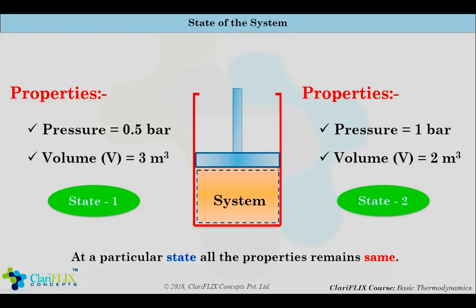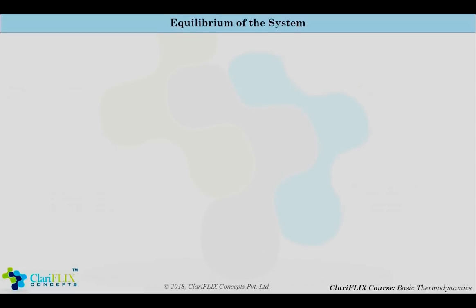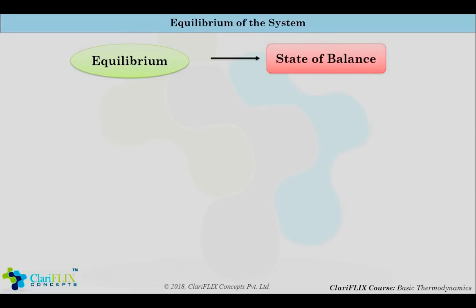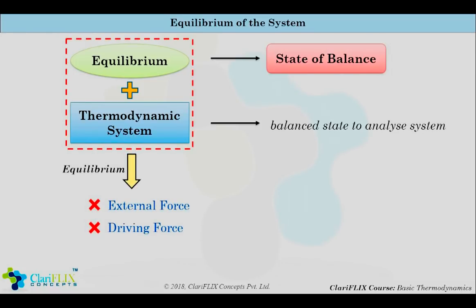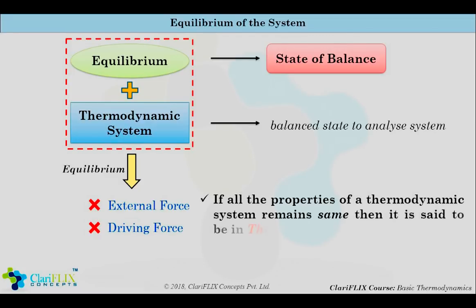Now let us understand what is equilibrium. In simple language, equilibrium is nothing but the state of balance. In thermodynamics, we generally deal with the balance state to analyze the system. When we say the system is in thermodynamic equilibrium, that means there is no external or any driving force within the system to change any property. If all the properties of the thermodynamic system remain the same, then the system is said to be in thermodynamic equilibrium.